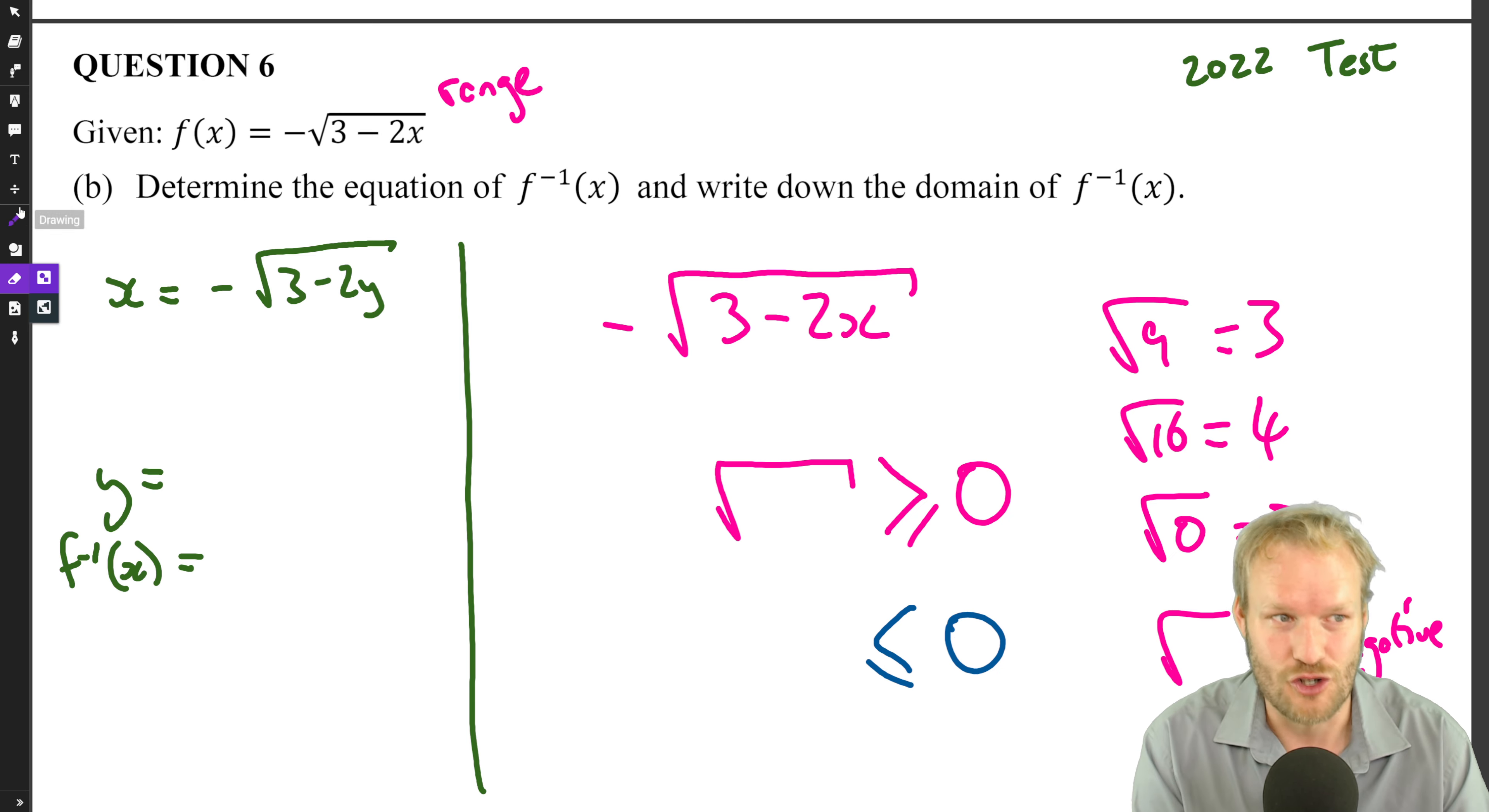So in other words, the range, the outputs of this, will always be less than or equal to zero, which means that the domain of the inverse is always negative or zero. And as a last thing, if you haven't already skipped over and jumped away.